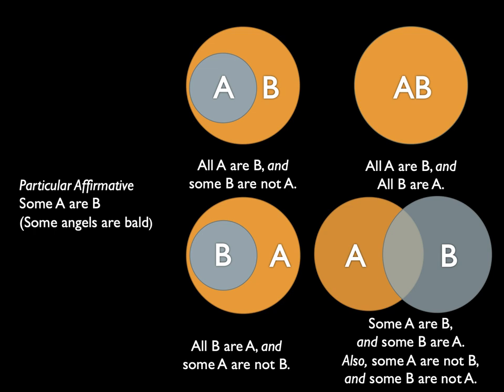Moving on to the particular affirmative. Like the universal affirmative, it lacks the terms "no" and "not," but unlike the universal affirmative, it uses the term "some." There are four possibilities for the particular affirmative. The top-left diagram is the same as the first universal affirmative: all angels are bald, but not all bald things are angels. The top-right is also the same as the universal affirmative: all angels are bald and all bald things are angels.